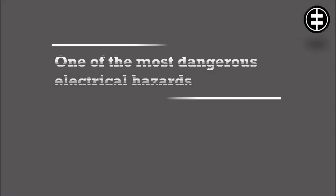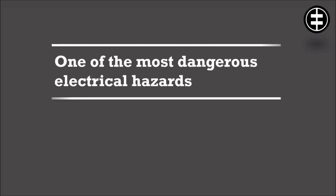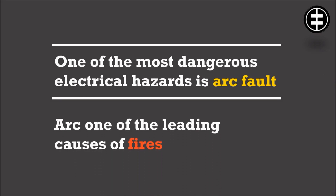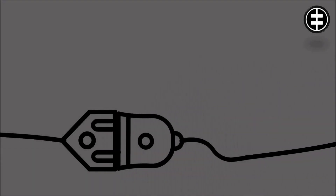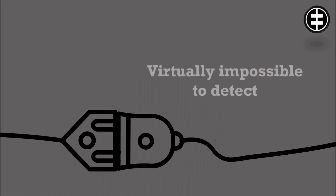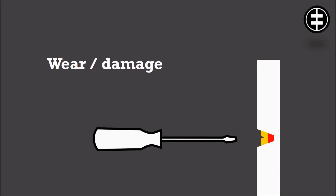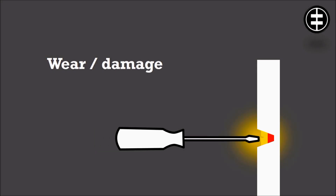One of the most dangerous electrical hazards is arc fault, one of the leading causes of fires. The main problem of electrical arc is the difficulty to protect against it, because arcs normally occur gradually, making them virtually impossible to detect. Wire damage is one key factor.